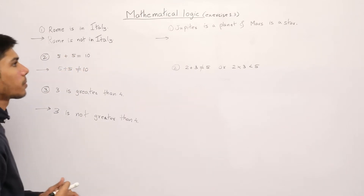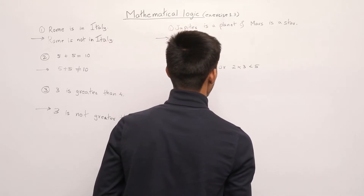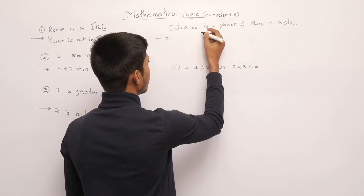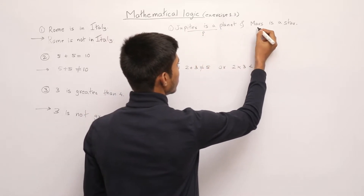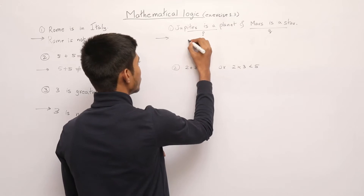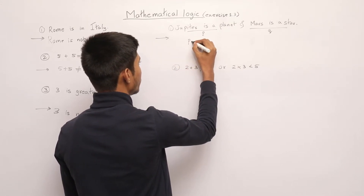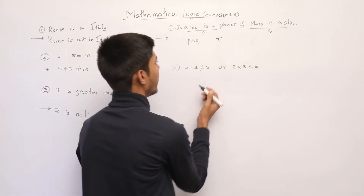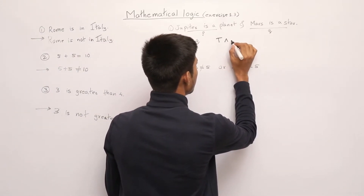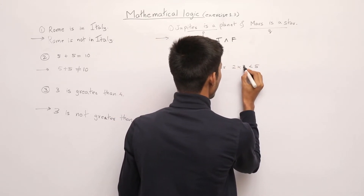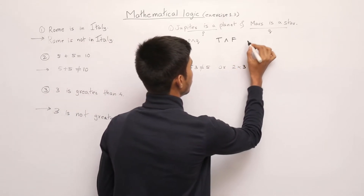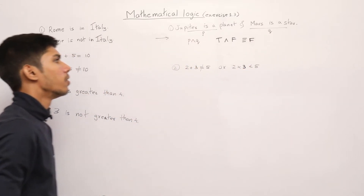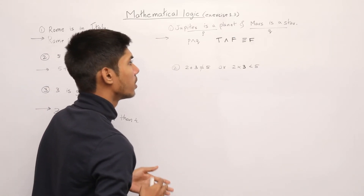The first statement is 'Jupiter is a planet and Mars is a star'. We consider the first part as p and the second as q, so the symbolic form is p AND q. The truth value of 'Jupiter is a planet' is true, and 'Mars is a star' is false. So the truth value of true AND false is false, because in AND conjunction, if both are true then true, otherwise false.